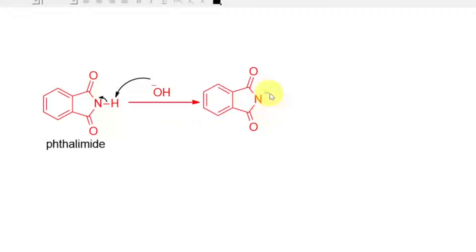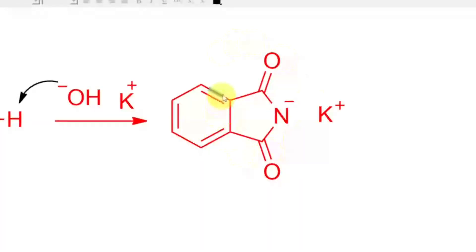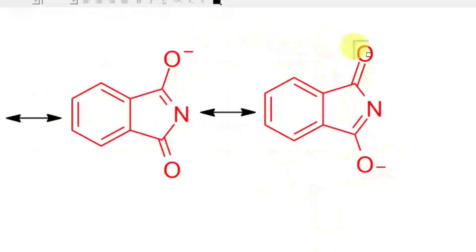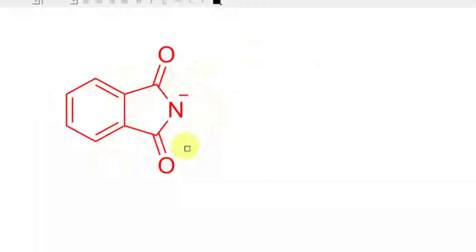The nitrogen gains a negative charge, and the counter ion is K⁺ (from potassium hydroxide), giving potassium phthalimide. This phthalimide anion is a synthon for NH₂⁻ and is resonance-stabilized. There are three resonance structures for this anion, which stabilizes it through resonance.